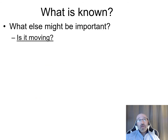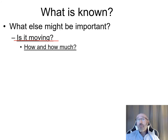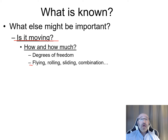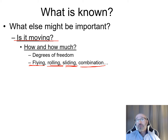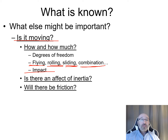Is it moving? If so, how — and how do we quantify that movement? We talk about degrees of freedom: is it flying, rolling, sliding, or a combination? If flying, are we dealing with air drag? If rolling, bearing friction? If sliding, coefficient of static and kinetic friction? Is there impact? What is our coefficient of restitution? Is there an effect of inertia? All of this comes into play in our equilibrium and free body motion equations.